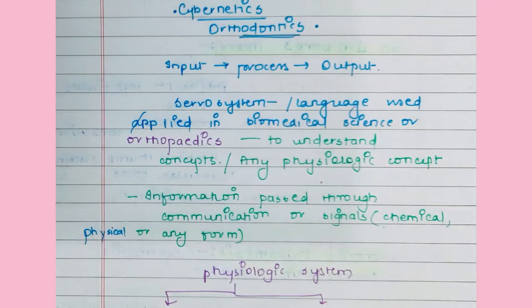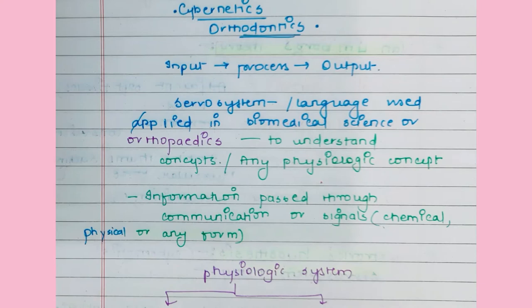Welcome to Dedicated Dentist. Today I'll discuss the Servo System Theory, also known as Petrovic's Hypothesis. It is based on cybernetics language — that is, it is used to explain loops or feedback mechanisms, such as the relationship of thyroid stimulating hormone releasing hormone and how they work.